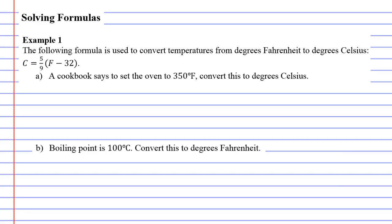For instance, when I look at example 1 here, this specific formula is used for converting between degrees Celsius and degrees Fahrenheit. So we'll start with question A, which says the cookbook says to set the oven to 350 degrees Fahrenheit, convert this to degrees Celsius.